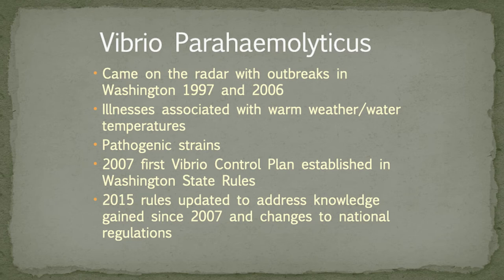The one exception to uniformity has been with Vibrio, because it is so different in every state. The program has allowed states to individualize their regulations with a certain basic set of things that need to be part of their Vibrio control plans, but it's allowed states to customize their plans — which is somewhat unique within the ISSC. For us in Washington State, Vibrio parahaemolyticus came on the radar with outbreaks in 1997 and 2006. Vibrio vulnificus and parahaemolyticus have dominated conversation at the ISSC for years.